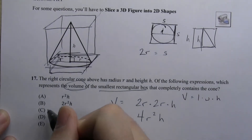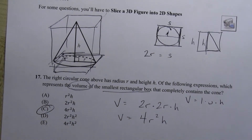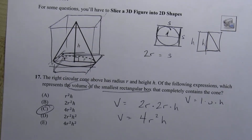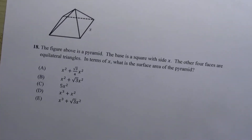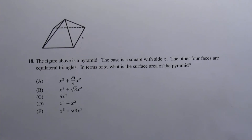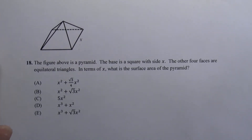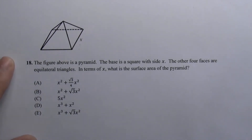That's why it's really important to think about three-dimensional shapes in terms of the two-dimensional geometric shapes that make them up. Let's try one more. This one is number 18, and it's also difficult. The figure above is a pyramid. The base is square with side x. The other four faces are equilateral triangles. In terms of x, what is the surface area of the pyramid?